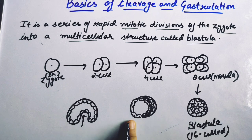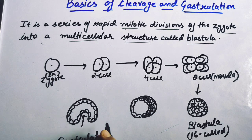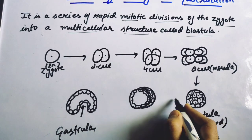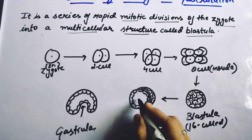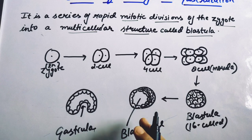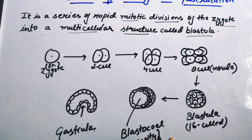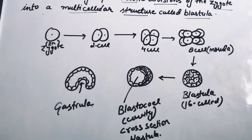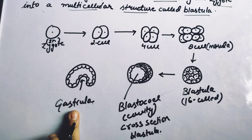The last step after blastula formation is the gastrula — this is the gastrulation process. When we look inside the blastula, we see a blastocoel, which is a cavity. This is the cross section of the blastula — if we cut the section of blastula, we can show the cross section.